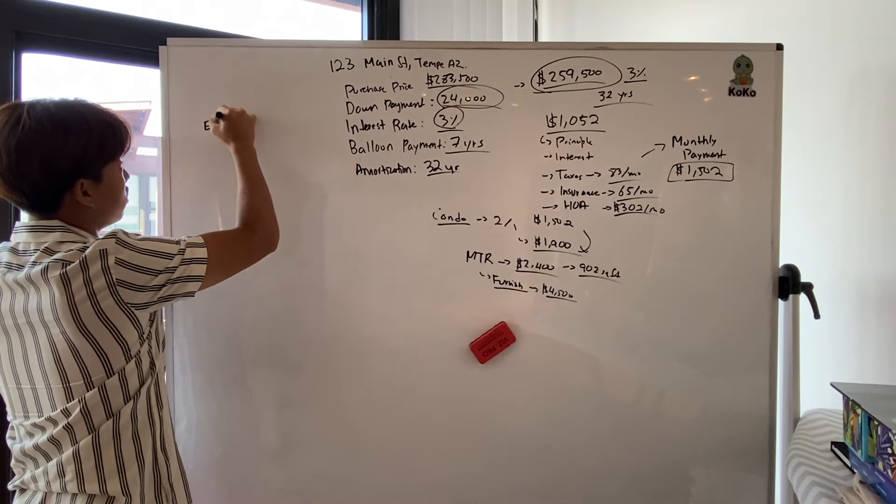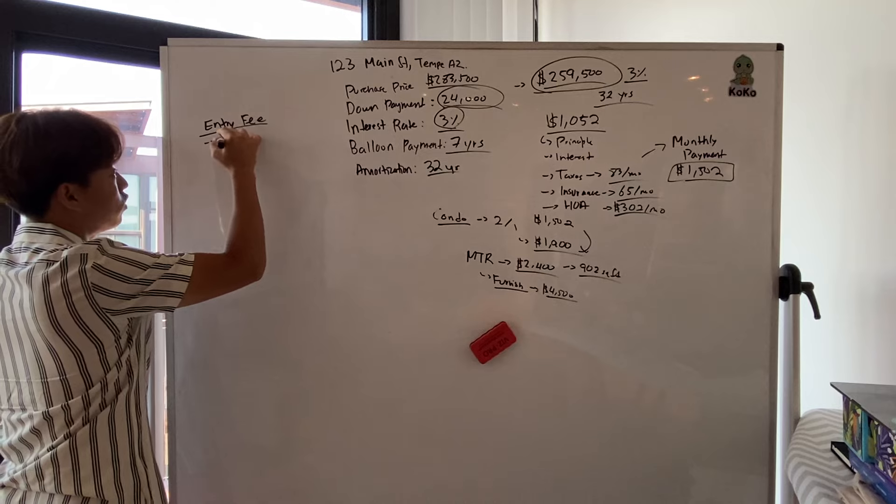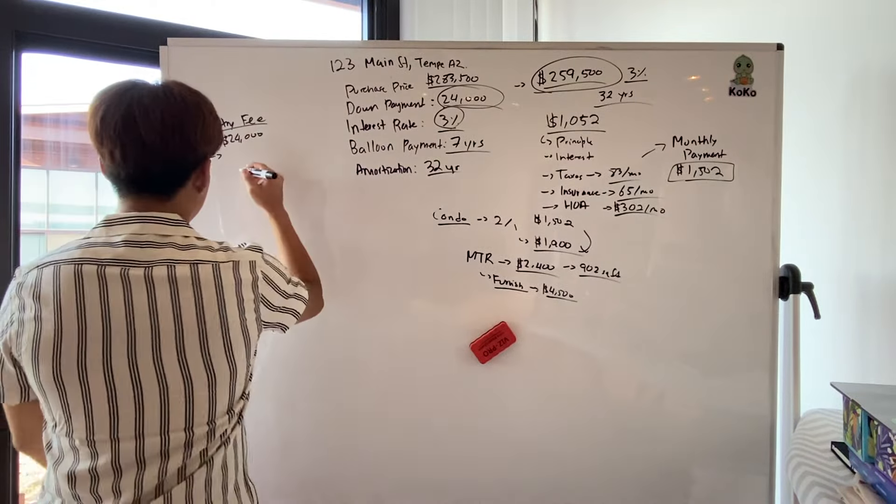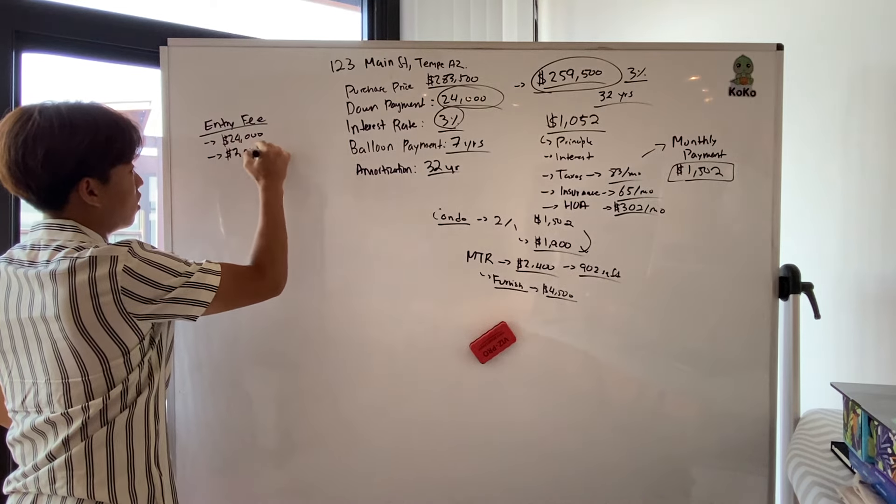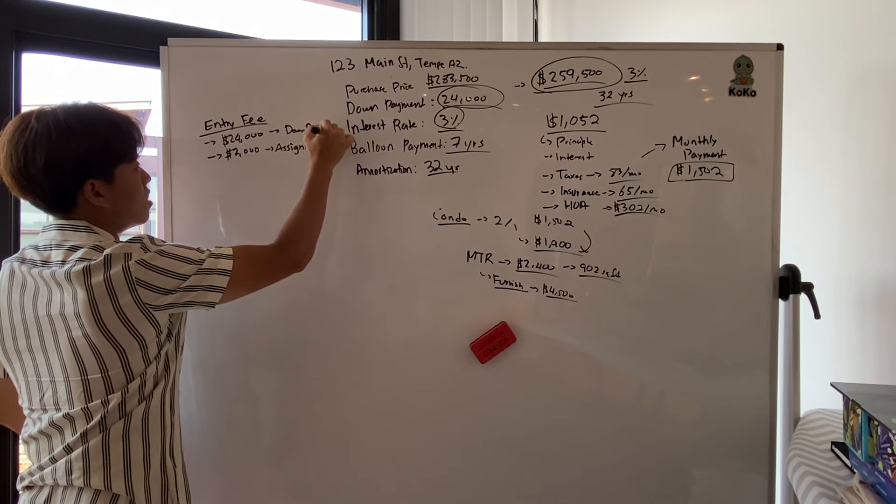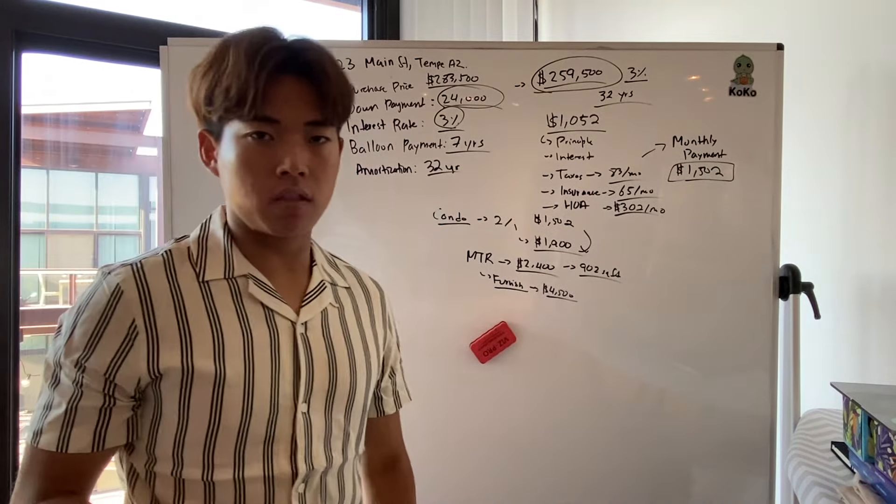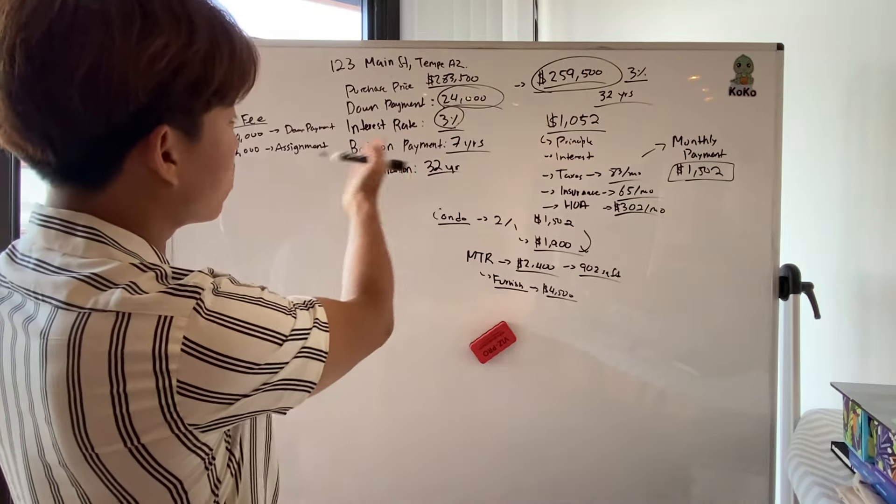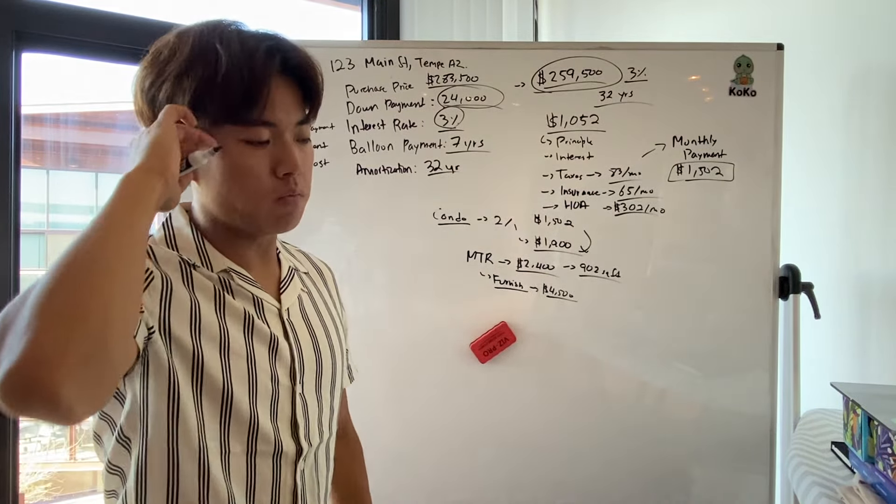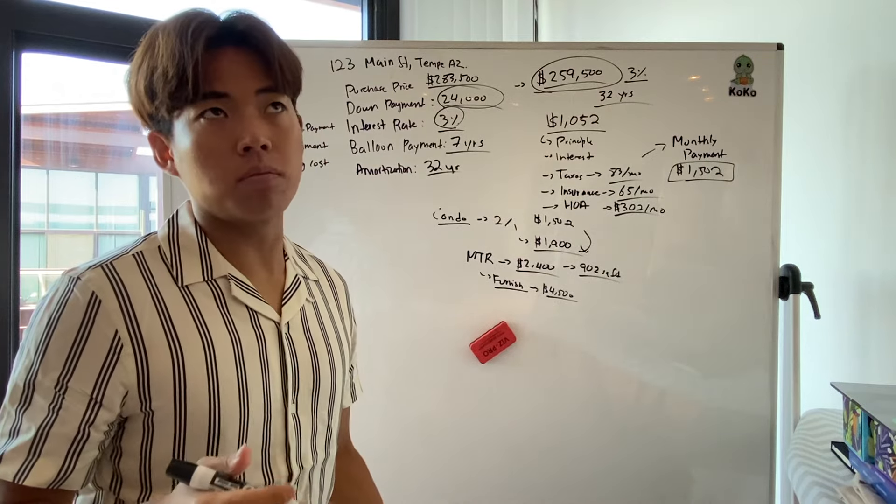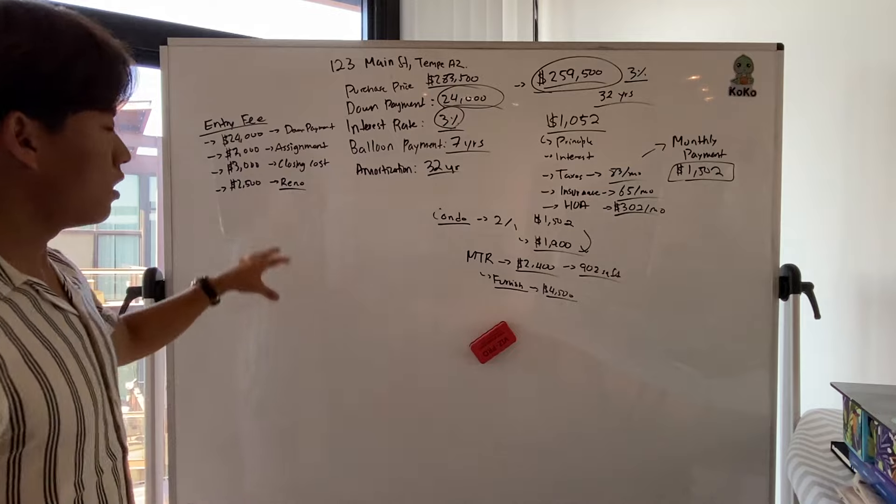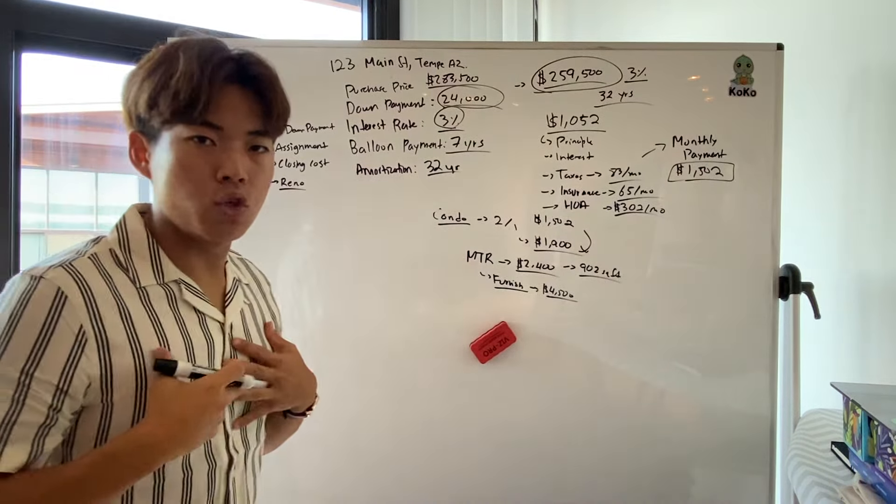So there's entry fee, $24,000 down. And this wholesaler, Tom specifically, he asked for a $7,000 assignment fee, which is very reasonable. And almost always the buyer pays all the closing costs. So I'm just going to say 1%. So we're going to put $3,000 in closing costs. And then I looked at the photos of the house and it's actually a really good house. So I don't think there's not much renovation that I'll do to the house. I'll probably do some deep carpet cleaning and really just get a cleaner out there. So it's going to, I'm just going to say $2,500.